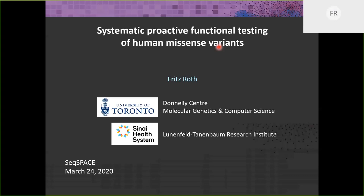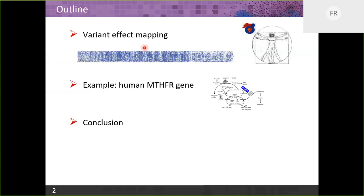I'm going to go very quickly through some background and an example application of systematic experimental testing of variant functions, with the goal of doing experimental testing proactively — often before we've seen a variant in a human. The outline covers background on variant effect mapping, then more detail on variant effect maps for the MTHFR gene, and then a couple of quick concluding slides.